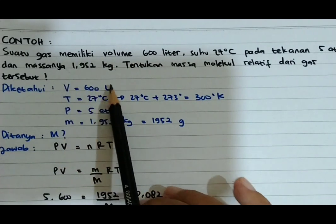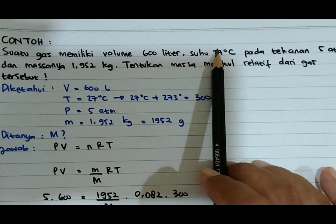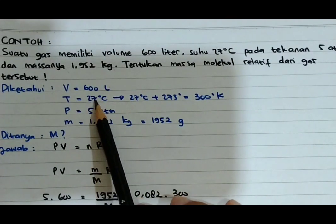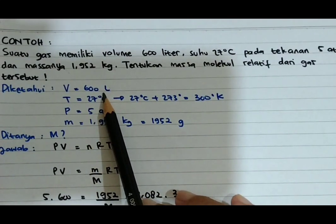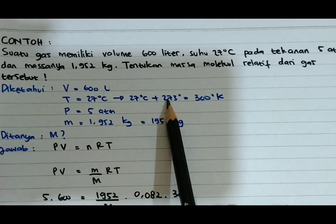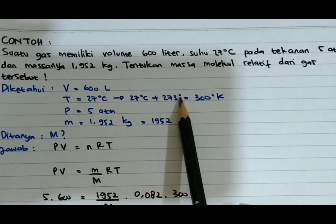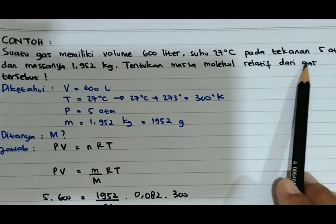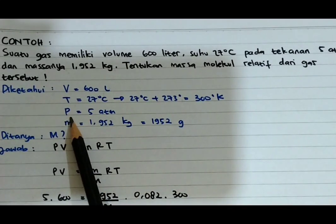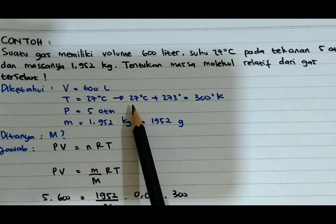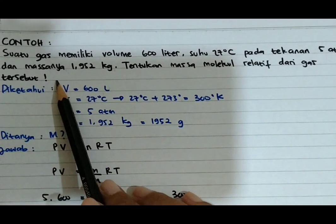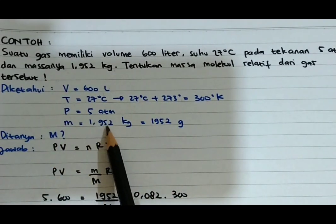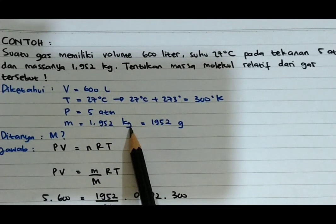Dari sini diketahuinya: volume V sama dengan 600 liter, suhu T = 27°C kita ubah ke Kelvin dengan cara ditambah 273 menjadi 300 Kelvin, tekanannya P sama dengan 5 atm, dan massanya M sama dengan 1,952 kilogram sama dengan 1952 gram.